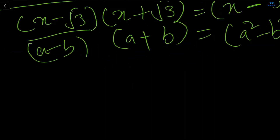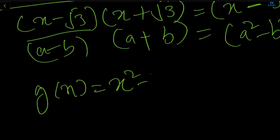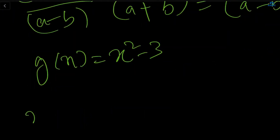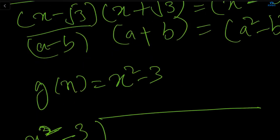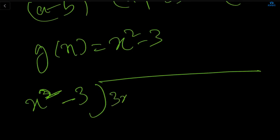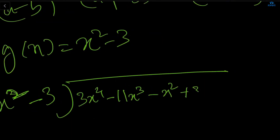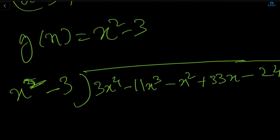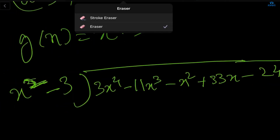Now we set gx = x² - 3 and divide px by gx. The given polynomial is 3x⁴ - 11x³ - x² + 33x - 24. Be very careful how this is done so you have no doubt — you will get one question from here. So x² - 3 divides into 3x⁴ - 11x³ - x² + 33x - 24. The first term of the quotient will be 3x².